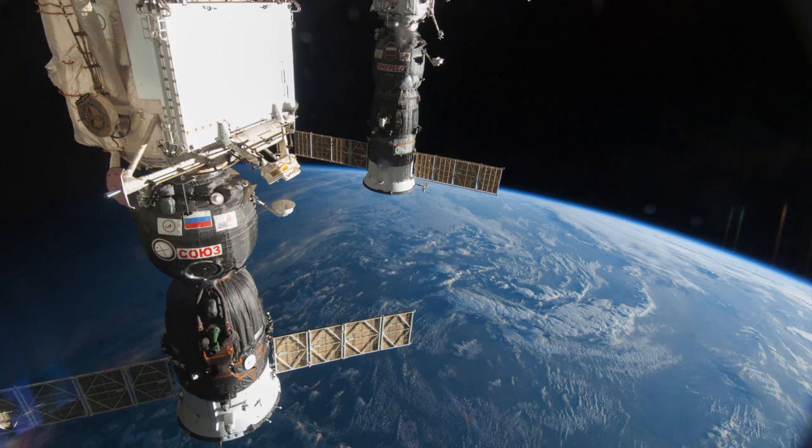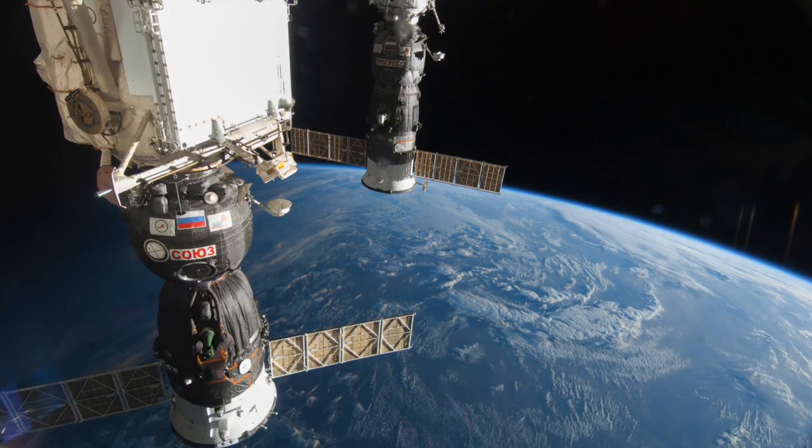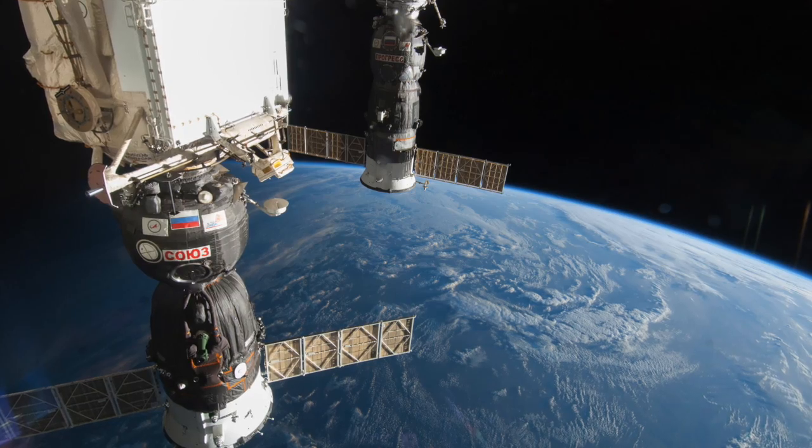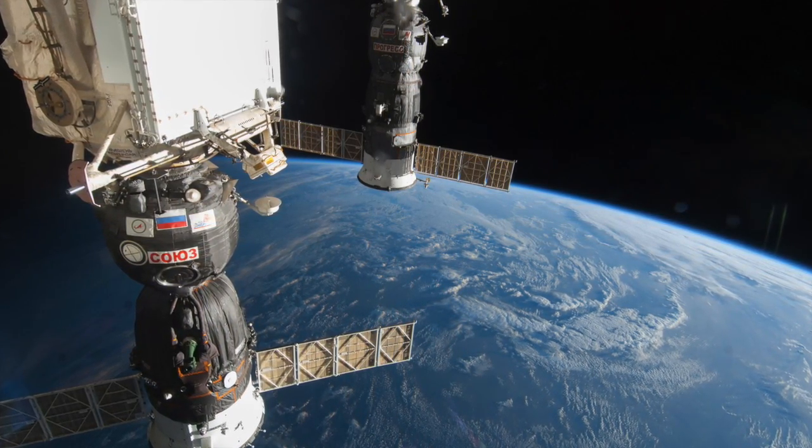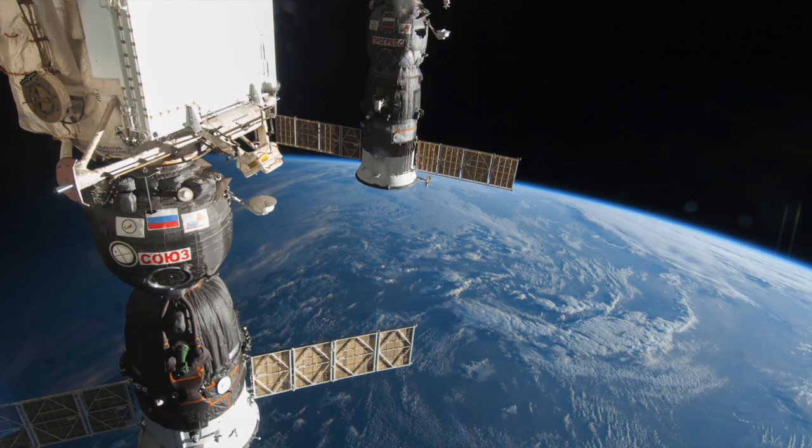Interestingly enough, it looked as if there had been a purposefully drilled hole in the siding of the Soyuz capsule, which led to Russian officials believing the ISS incident was a form of sabotage from one of the astronauts.